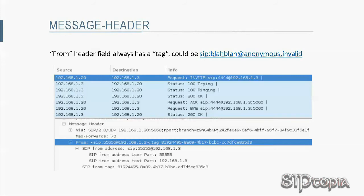Moving on to the From header field: it is very similar to the To header field, with the exception that the From header field always has a tag. It is important to note that the host portion of the URI in the From header field is not Tarzan's IP address. Also, if the identity of the client needs to be hidden, you may also see random URIs like SIP:xxxxx@anonymous.invalid used.